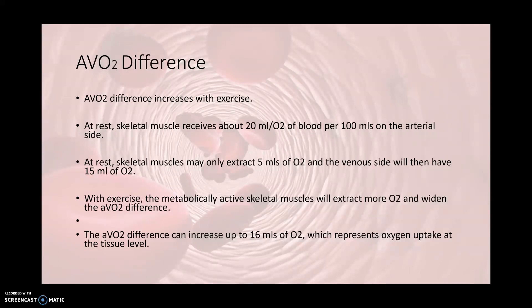The AVO2 difference represents the difference in oxygen between the arterial side and the venous side, telling us how much oxygen is dropped off at the tissue level. If we measured oxygen on the arterial side and it was 20 mLs, then measured on the venous side and had 15 mLs, that means we only extracted 5 mLs of oxygen at the tissue level. During exercise, we extract a lot more and widen that AVO2 difference.